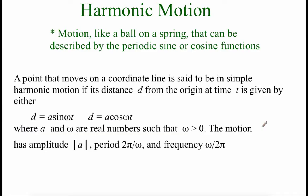The next type of problem we're looking at are called harmonic motion problems. We're tracking the motion of a ball or particle on a spring bouncing up and down, which we can describe using sine or cosine functions. A point is in simple harmonic motion if its distance d from the origin at time t is given by d = A·sin(ωt) or d = A·cos(ωt), where A and ω are real numbers and ω > 0. The amplitude is |A|, the period is 2π/ω, and the frequency is ω/(2π).